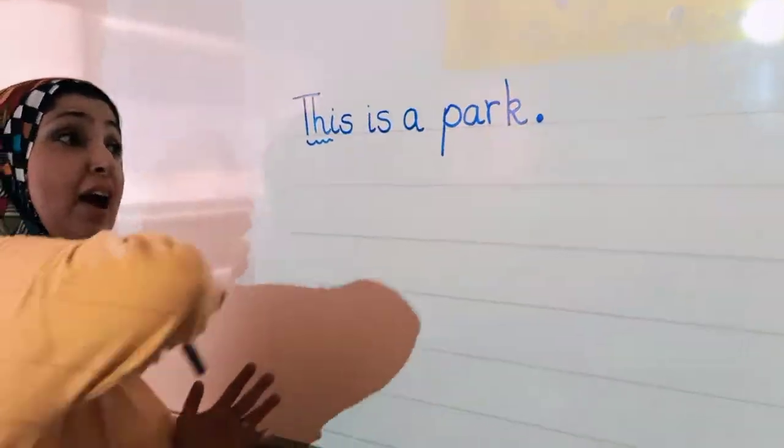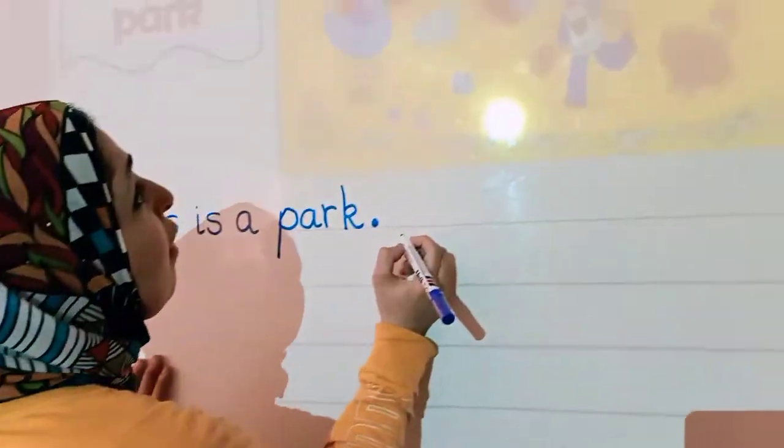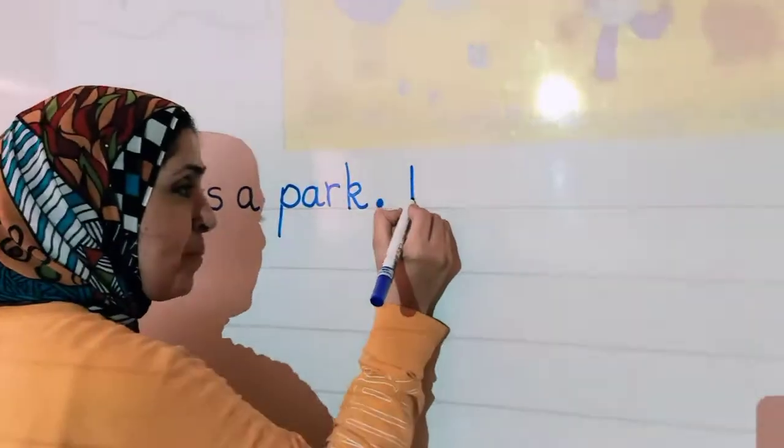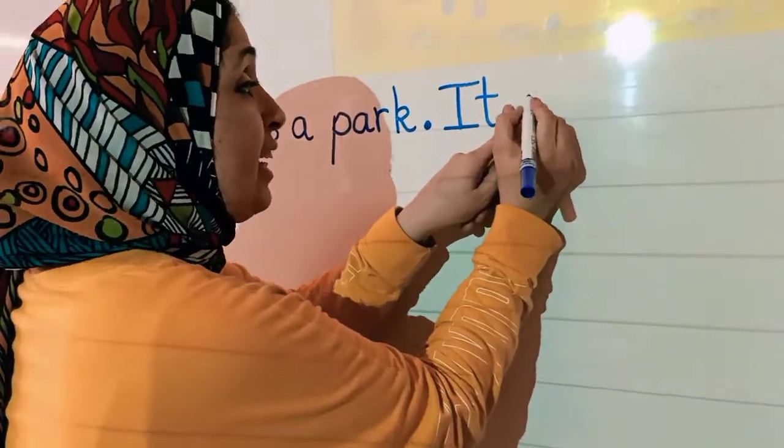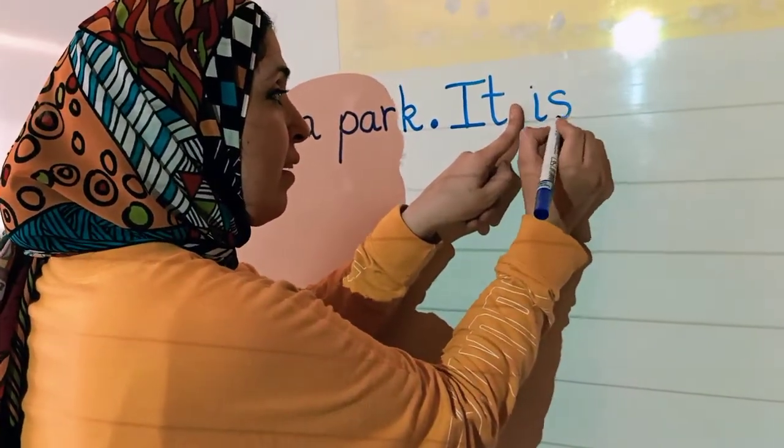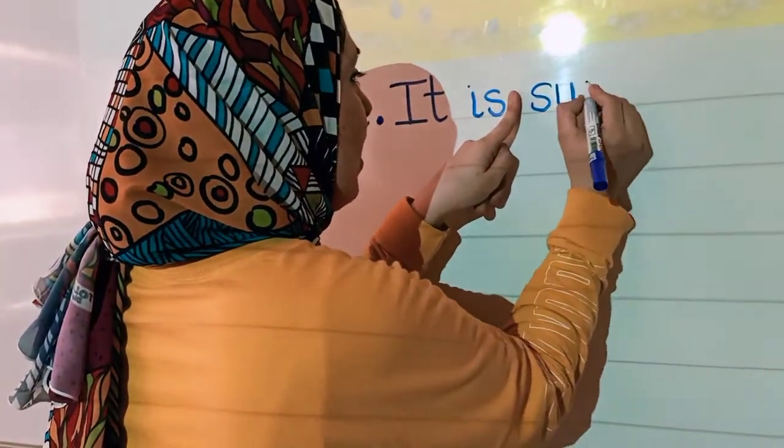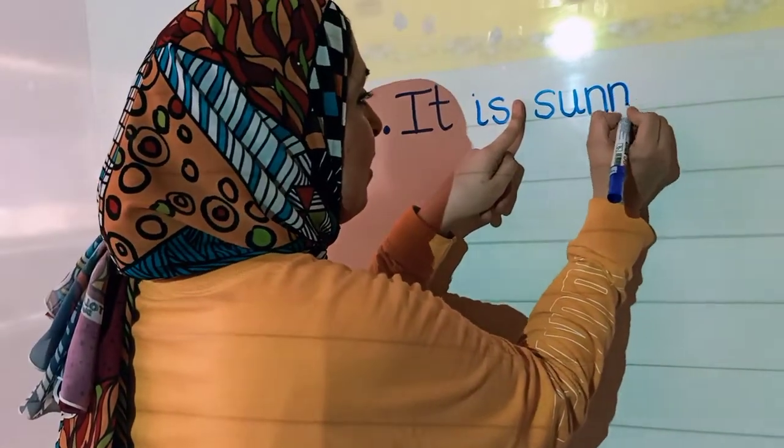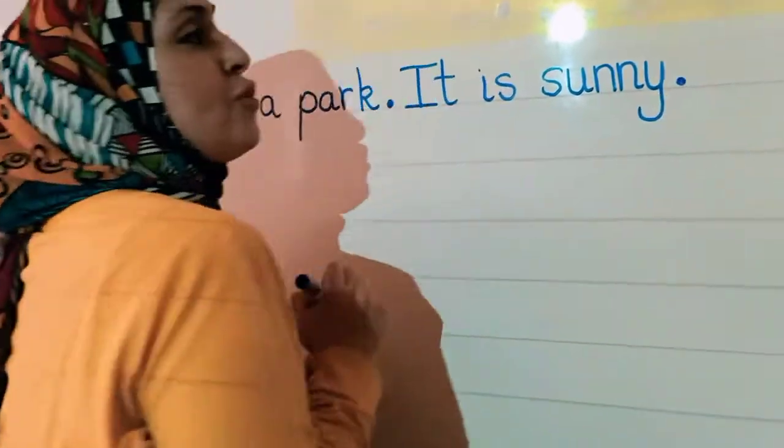And a full stop. Now, after any full stop, I should write the sentence starting with a capital letter. What's the weather? Is it raining? No, it's sunny. So I start with capital I. It is sunny. Put my finger, s, u, double n. Sunny. And a full stop.